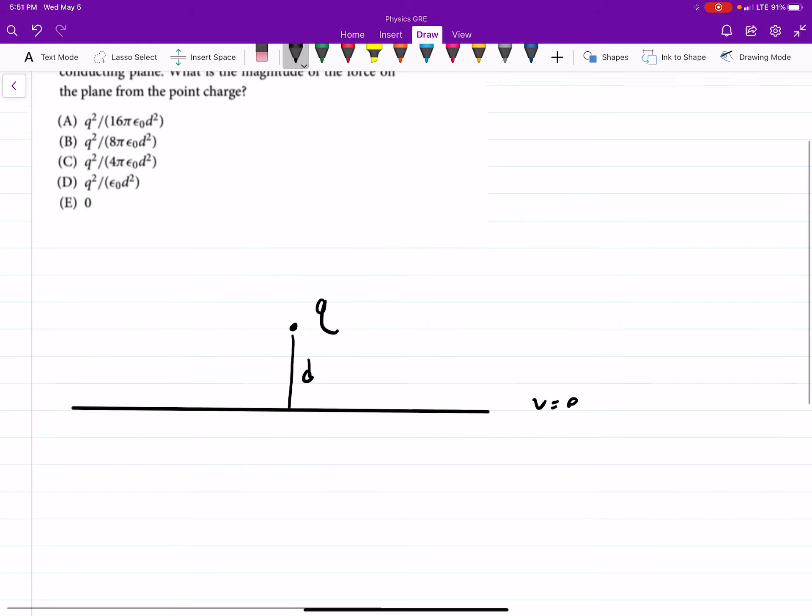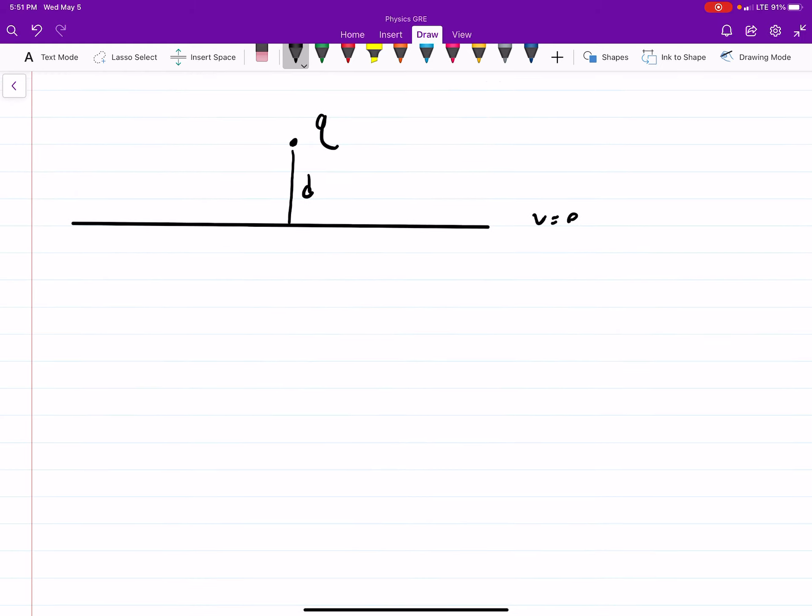So the way that we're going to do this is we have to do method of imaging. So the conducting plane goes away, and I'm replacing it with this dashed line.